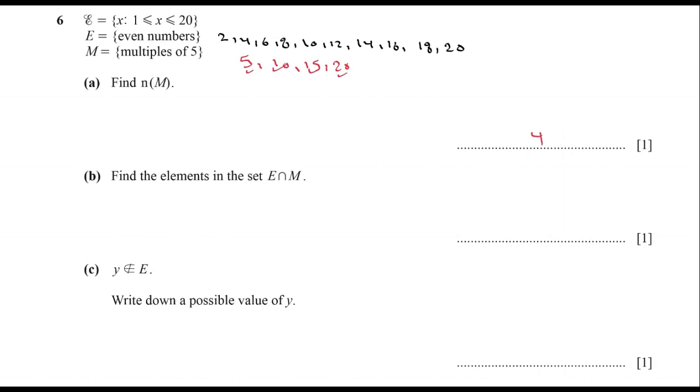Part (b): Find the elements in the set E intersect M. E intersect M has two elements: 10 and 20. Part (c): y does not belong to E. Write down a possible value of y.